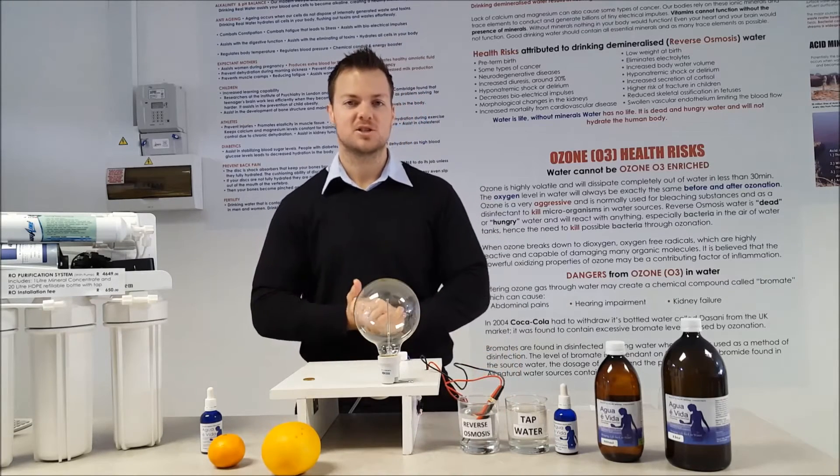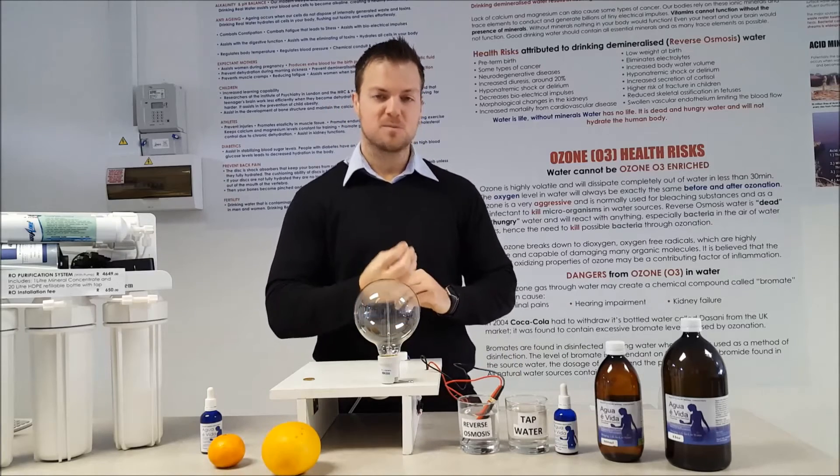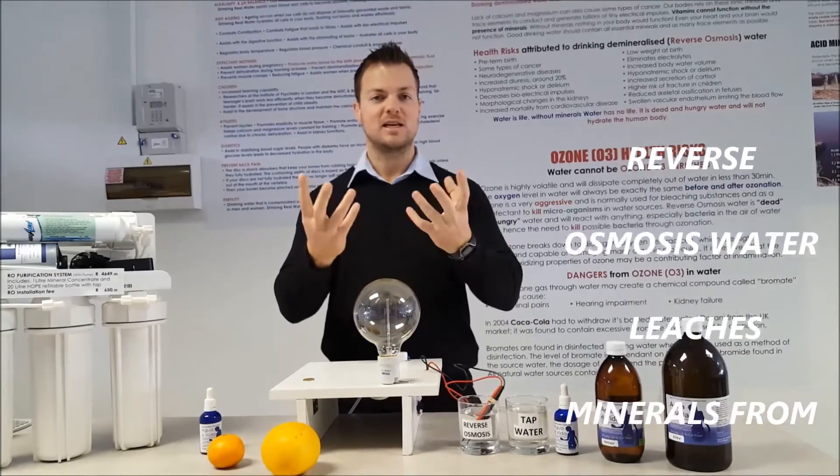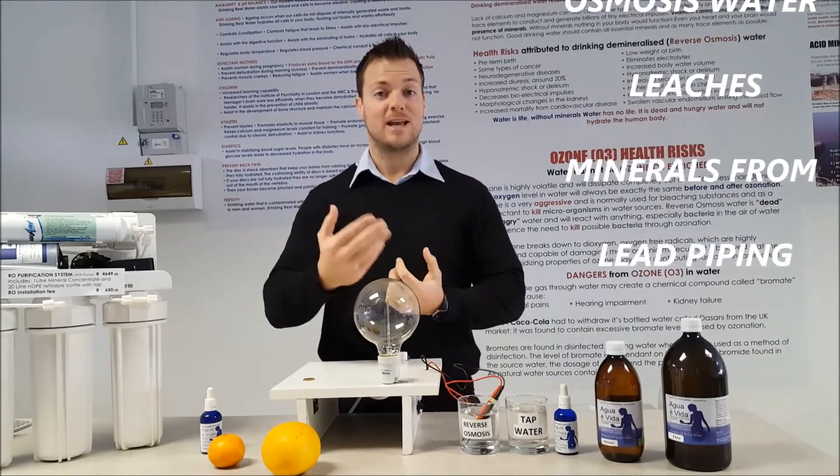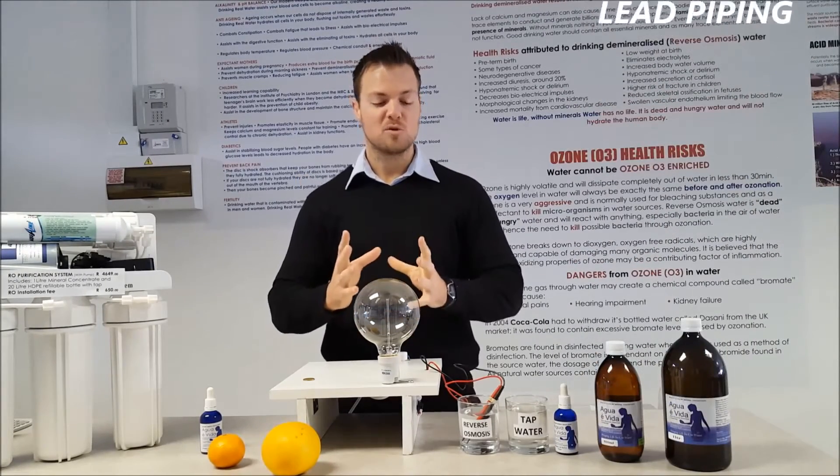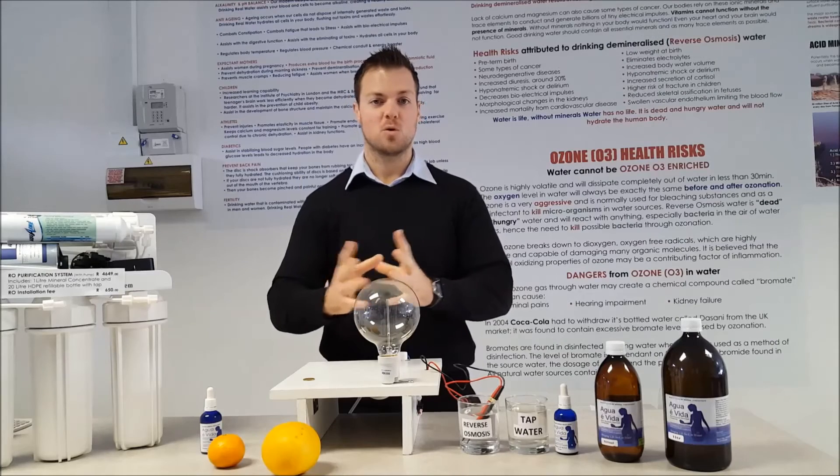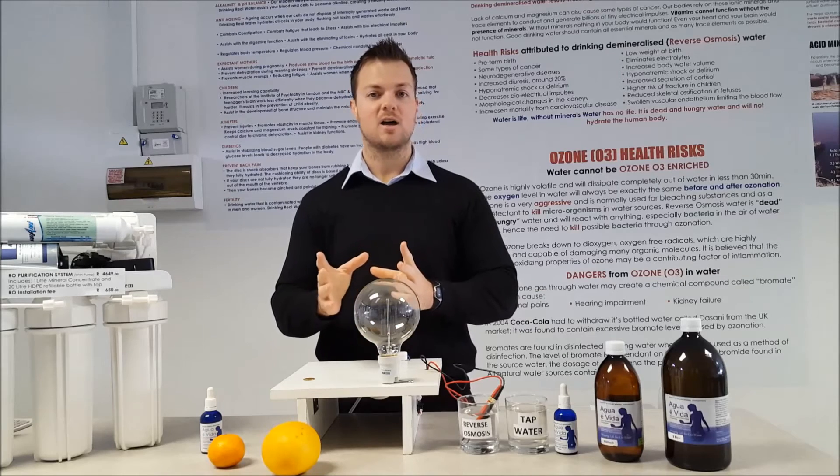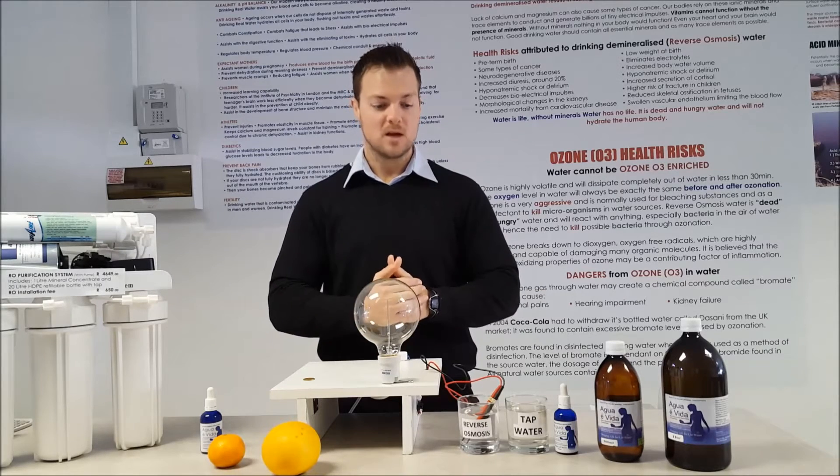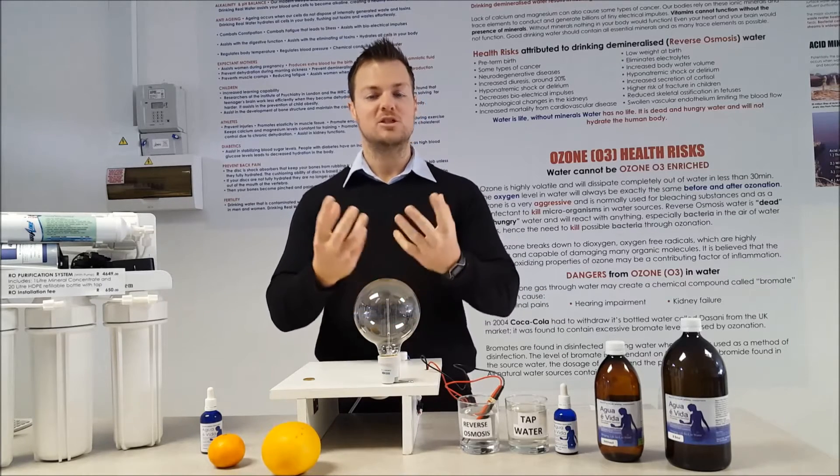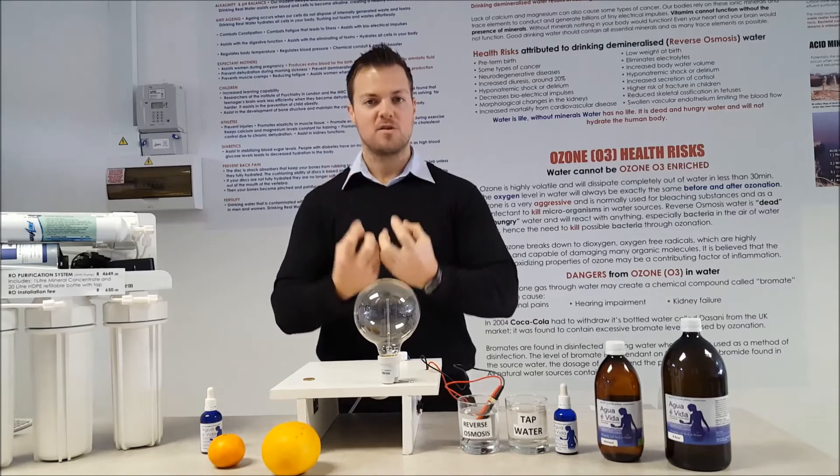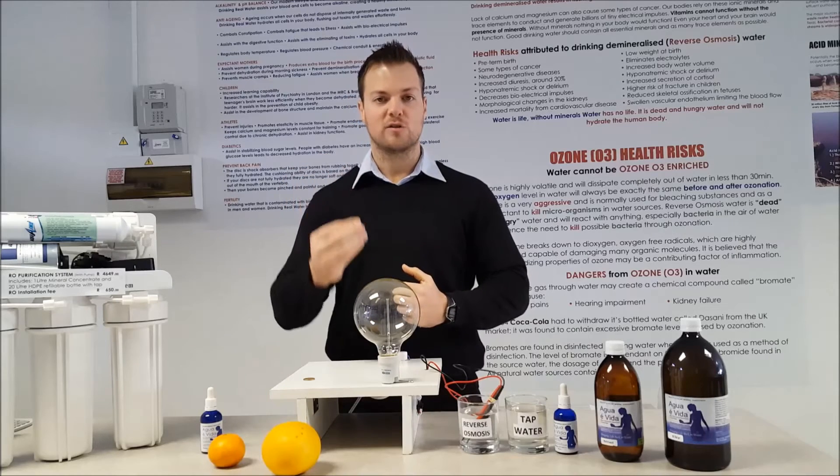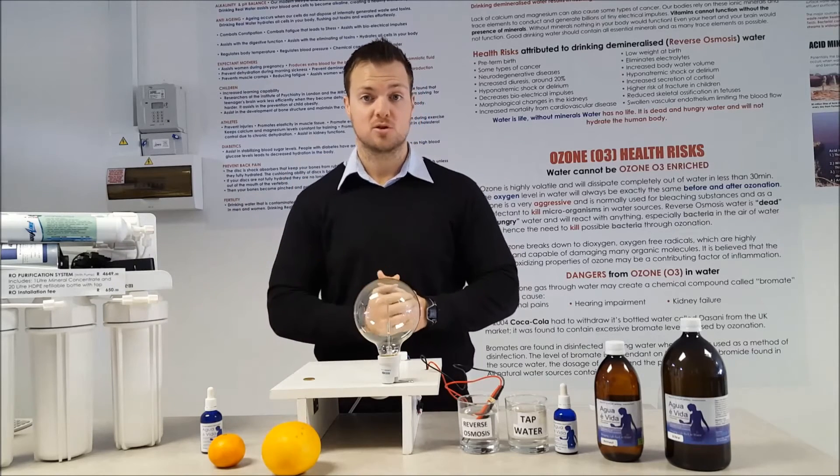The World Health Organization has done a study that reverse osmosis water is so aggressive and so hungry that they have found that it actually leaches the minerals out of lead piping. A small community that used reverse osmosis systems, a lot of their kids started to die of lead poisoning because the reverse osmosis water was leaching so many minerals out of the piping causing corrosion, causing leaks and causing the lead to dissolve into the water and was poisoning the children.